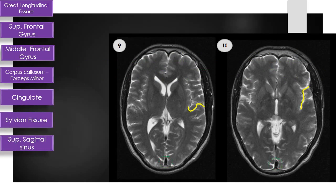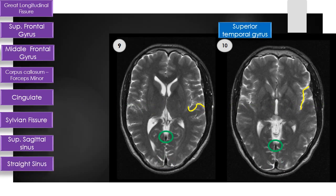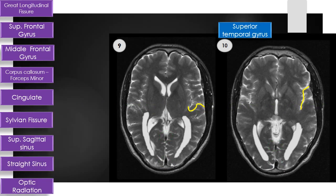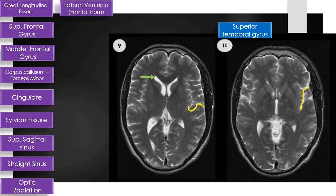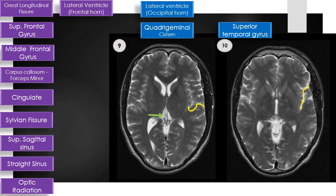Also visible are the superior sagittal sinus, superior temporal gyrus, and straight sinus. The optic radiation is a bundle of white matter which starts from the lateral geniculate body and goes to the visual cortex. The lateral ventricle with its frontal horn and occipital horn, as well as the quadrigeminal cistern and third ventricle are also seen.